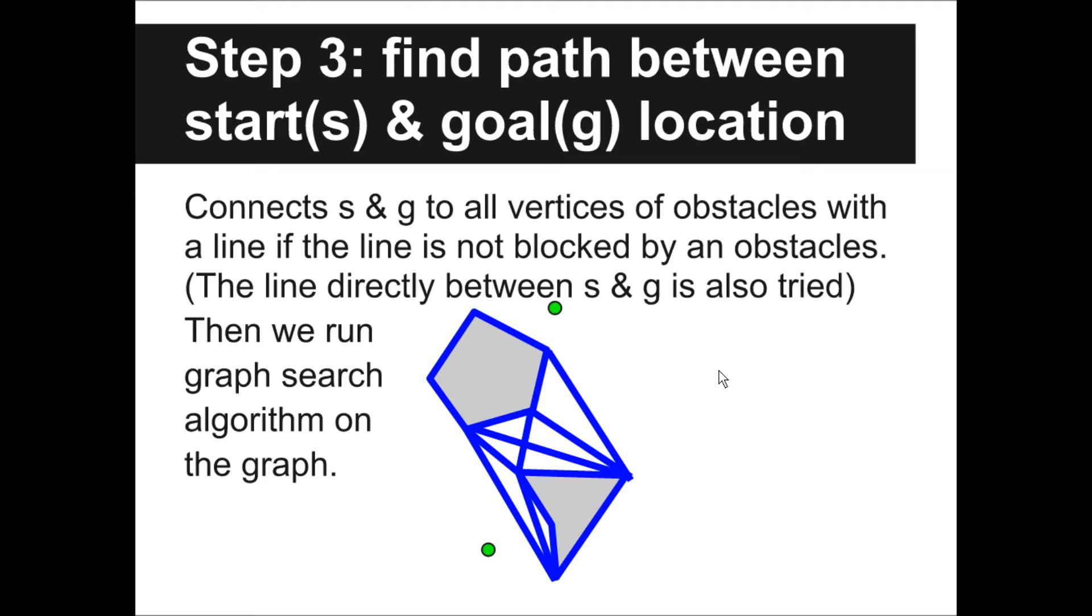After we have the visibility graph, we can find the shortest path between two locations, start and goal, in the following way. First, connect start and goal to all vertices of the obstacles with a line if the line is not blocked by an obstacle. The line directly from start to goal is also considered.